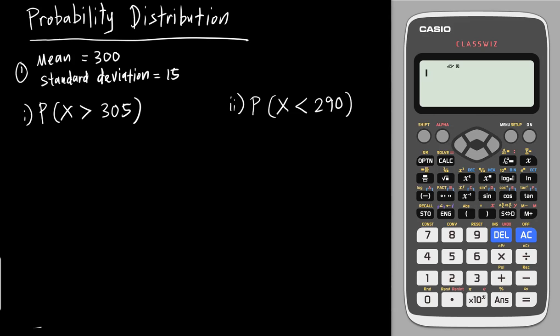This video is sponsored by Casio Malaysia. In this video, I will teach you how to use the new Casio 570 EX calculator to find the probability for the bell shape diagram in the topic of probability distributions.